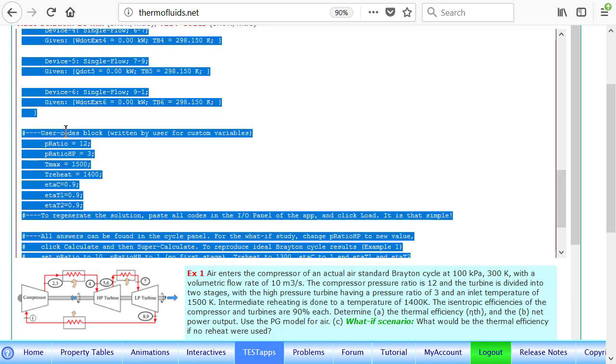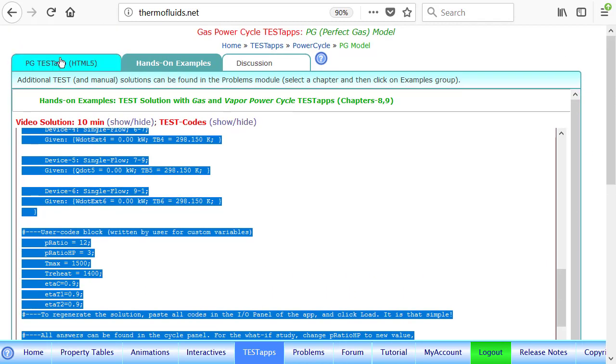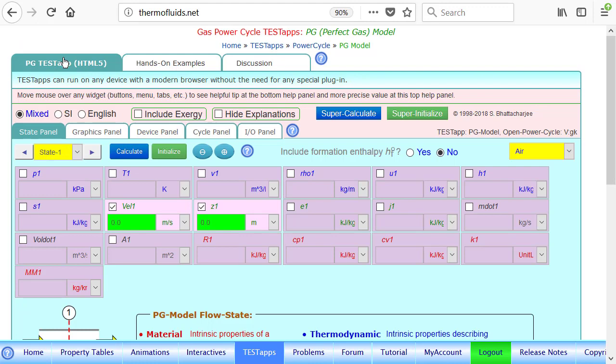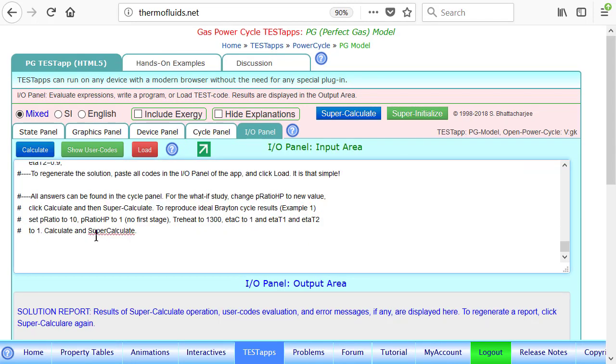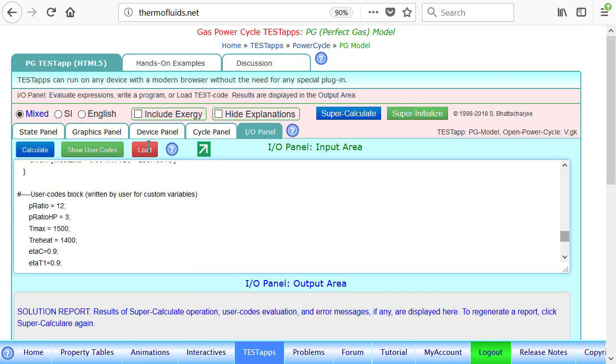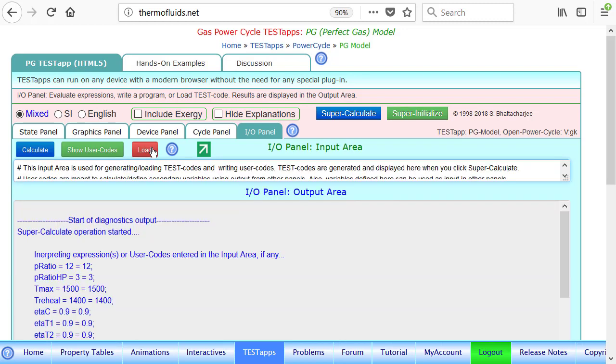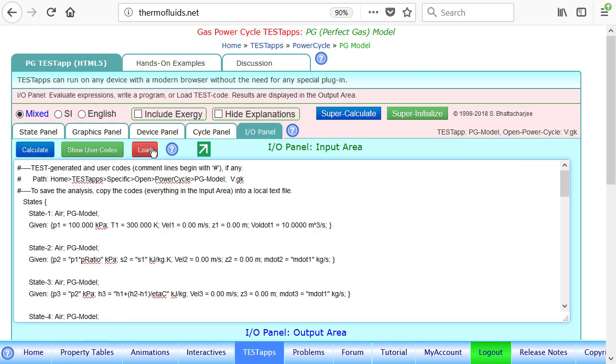So let's go and copy this test code and go to the test app page. Launch it by clicking this tab, and we are going to just paste the test code and load. Sometimes loading doesn't complete the calculation; you may have to do super calculate to finish the calculation.